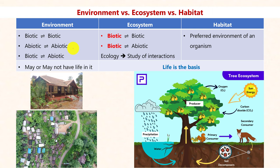From the definition itself, we can conclude that environment can be anything — it can be as huge as the earth's surface or as minute as a cell environment. In an environment, there may or may not be life. The important factor is the interactions between components, and life is not the most determining factor. In the ecosystem, life forms the basis — it is at the core and heart of the ecosystem and habitat. Without life, we cannot consider an environment as a habitat or an ecosystem.